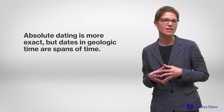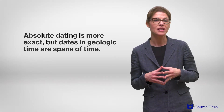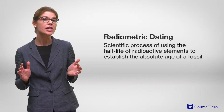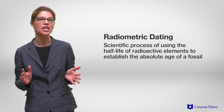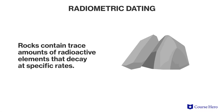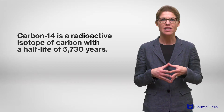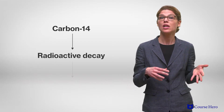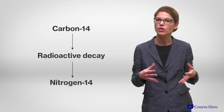Absolute dating is more exact, but dates in geologic time as spans of time, not specific dates. Determining absolute age is done with radiometric dating, the scientific process of using the half-life of radioactive elements to establish the absolute age of a fossil. Rocks contain trace amounts of radioactive elements that decay at specific rates, starting from when the rock was formed. An example of a commonly used radioactive element is carbon-14, which has a half-life of 5,730 years. When an organism dies, the amount of carbon-14 it contains at the time of death slowly decays to become another element, nitrogen-14.